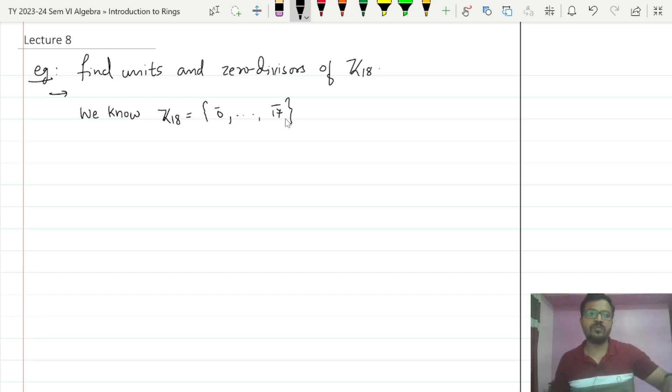Because if we find units, the rest elements will be zero divisors, and if we find zero divisors, the rest of the elements will be units. Because any non-zero element will be either a unit or a zero divisor. Now the question is how many non-zero elements are there in this case? There will be 17 non-zero elements, starting from 1 bar up to 17 bar.